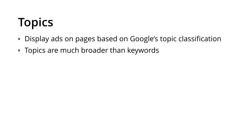Then we have topics. This is where ads are displayed on sites on the display network based on Google's topic classification. Topics are similar to display keywords, but they're much broader. For example, we can choose to target the topic of healthy eating and our ads will automatically be displayed on sites that Google has classified as relating to this topic.